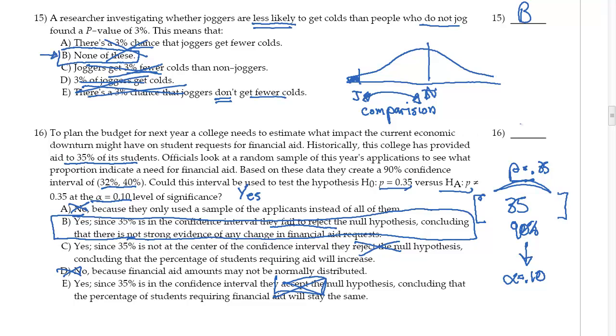We don't accept, we just fail to reject. Remember, that's the verbiage that we use here. So we have B. All right, I'm going to stop here and we're going to do part five starting with question 17.